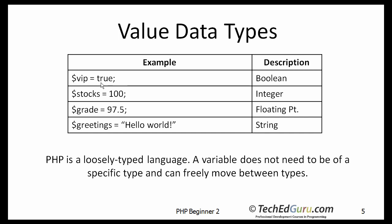Here are a few examples. I am storing a value true in a variable called vip, and in this case the type of that variable is boolean. Here is a whole number, integer type; 97.5, a floating point type; and hello world, a string type.